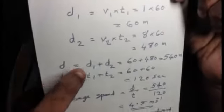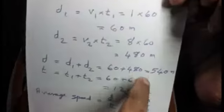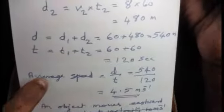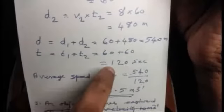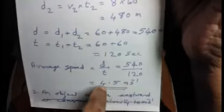Total distance D equals D1 plus D2, that is 60 plus 480 equals 540 meters. Total time equals 60 seconds plus 60 seconds equals 120 seconds. Average speed equals total distance by total time, that is 540 by 120, which is 4.5 meters per second.